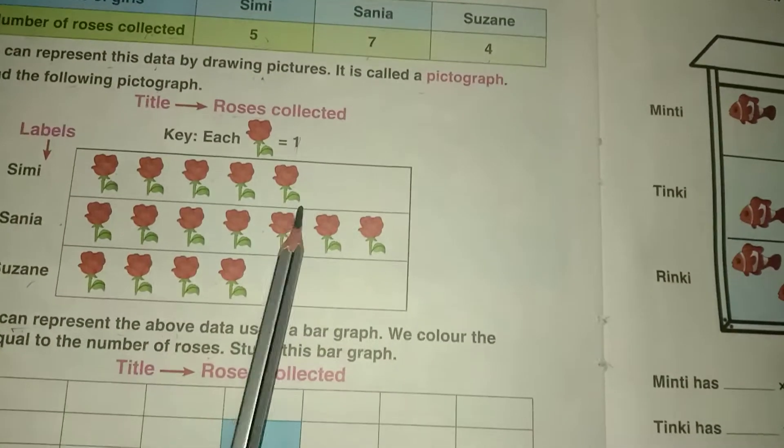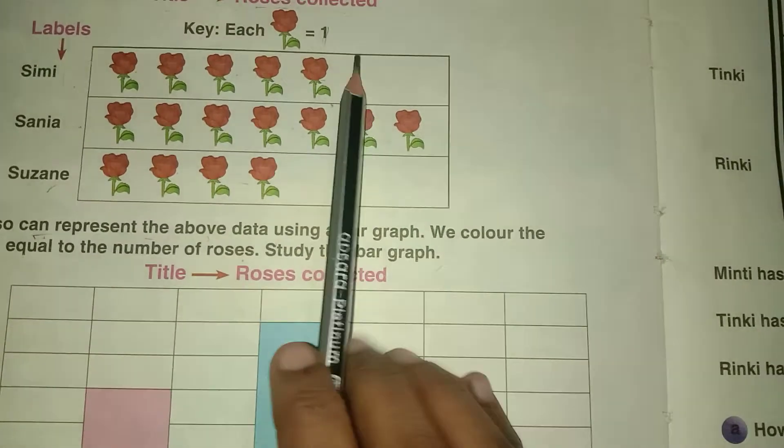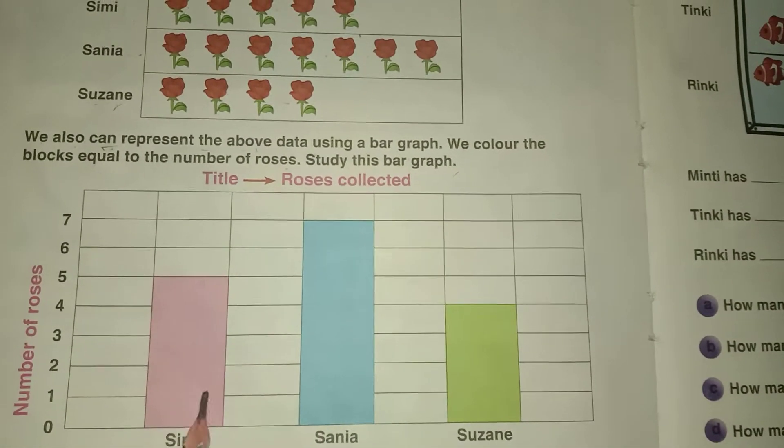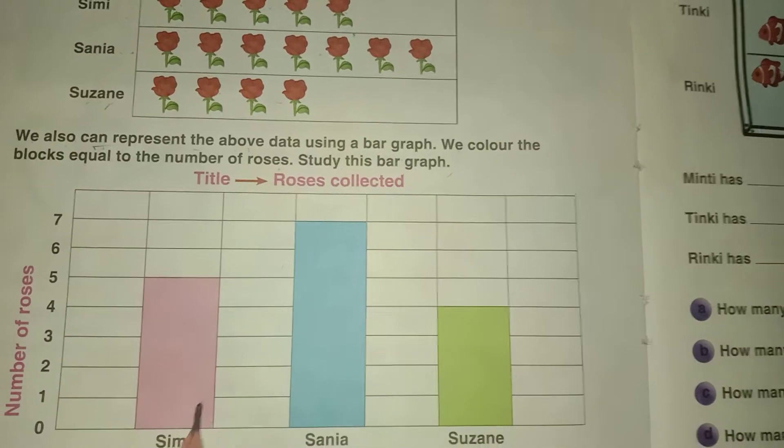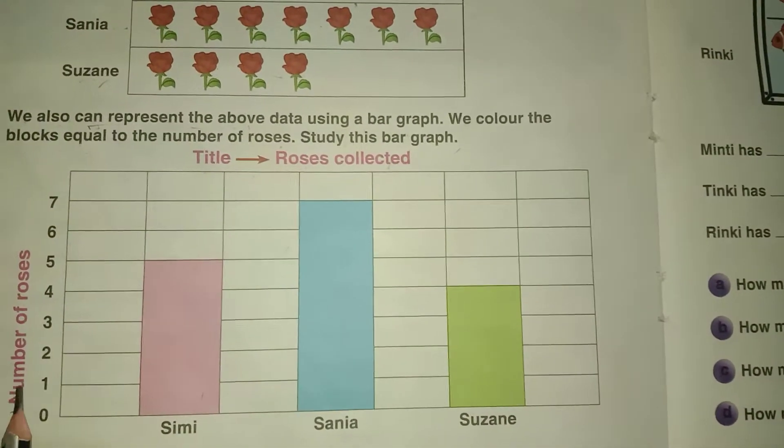This is pictograph we have studied in yesterday's class and this example can be represented by using bar graph. This is the bar graph. The colored blocks are the number of roses. The title is roses collected and the number of roses.